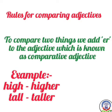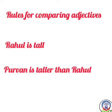Example: high → higher; tall → taller. Rahul is tall — no comparison here, kisi ke saath uska comparison nahi hai. Rahul is tall. Purvin is taller than Rahul — comparison of two, do ka comparison hai, Purvin aur Rahul ka. Purvin Rahul se lamba hai.